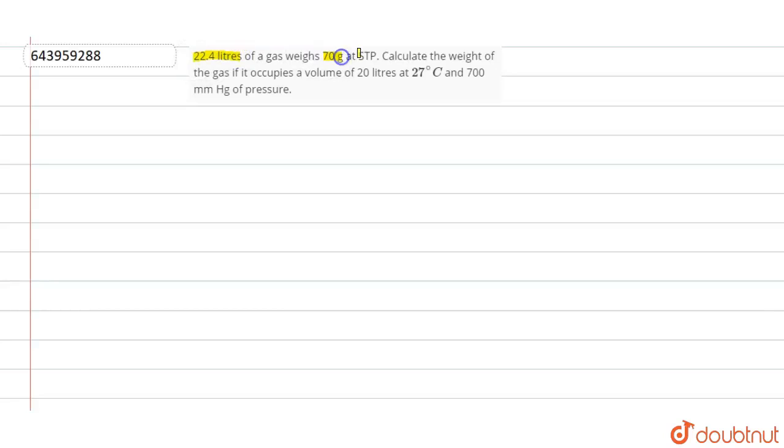STP is standard temperature and pressure. Calculate the weight of the gas if it occupies a volume of 20 liters at 27 degrees Celsius and 700 mm Hg of pressure. So what we have to find here, we have to find the weight of a gas.